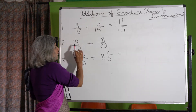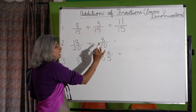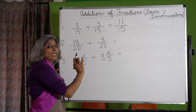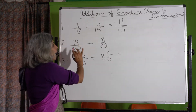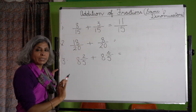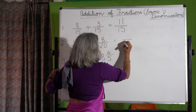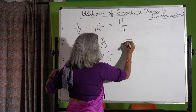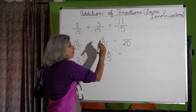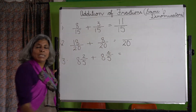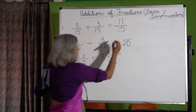Now we come to the next sum: 18 upon 20 plus 8 upon 20. Again, what do we do? We add the numerators and the denominator remains the same. So the denominator is 20, and 18 plus 8 is 26, giving us 26 upon 20.